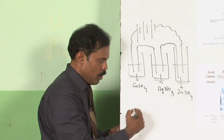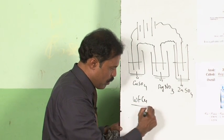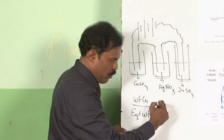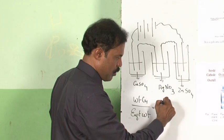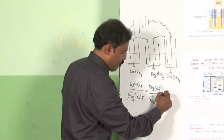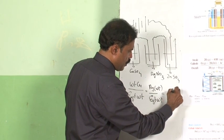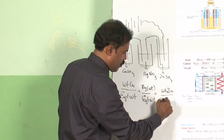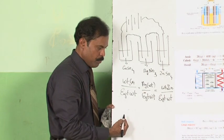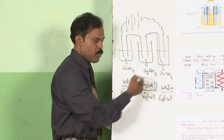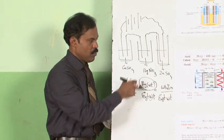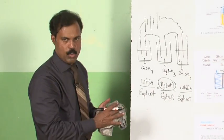According to Faraday's second law, the weight of copper deposited divided by its equivalent weight equals the weight of silver deposited divided by its equivalent weight, which also equals the weight of zinc deposited divided by its equivalent weight. So if you know the weight of one substance deposited, you can calculate how much of another substance would be deposited, provided you know its equivalent weight.